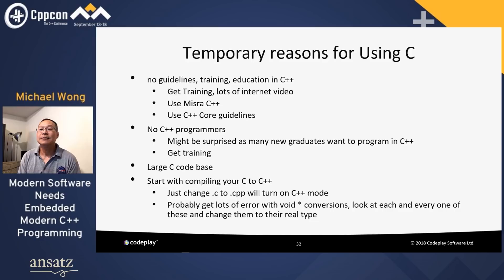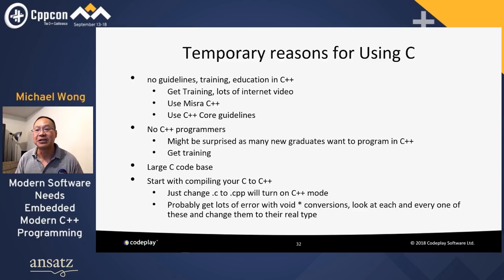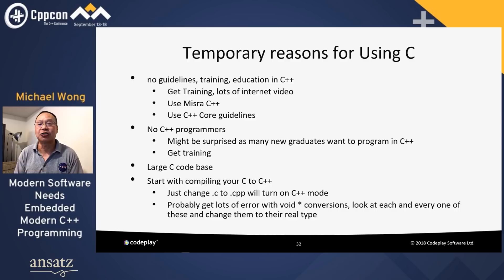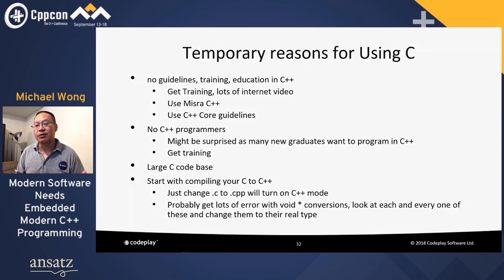There might be temporary reasons to stick with C: no guidelines, no training or education in C++. There's lots of internet video on C++ and much of this conference goes freely available on YouTube. You might use MISRA C++ or the C++ Core Guidelines. Your staff might have no C++ programmers — though many graduates today want to program in C++. You might have a very large C code base. In most cases you just change .c to .cpp, turn on C++ mode, and resolve void-conversion errors by changing them to their real types.